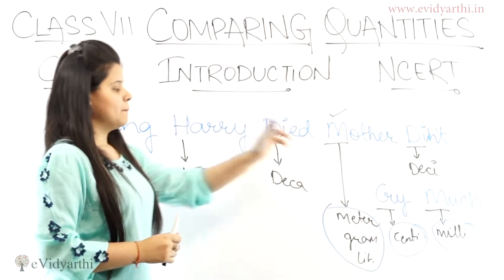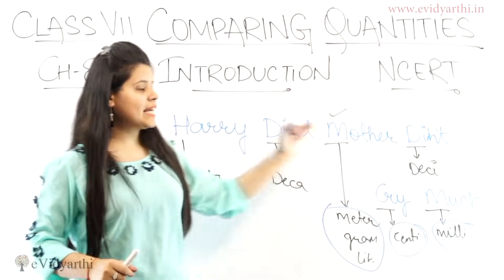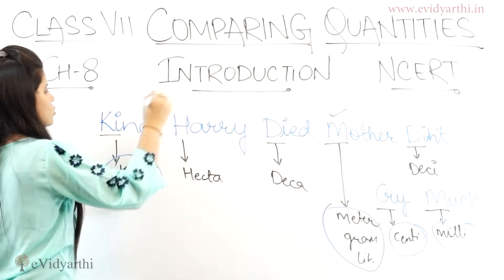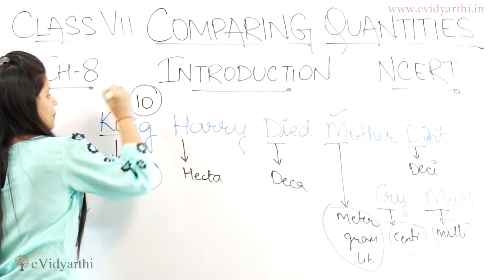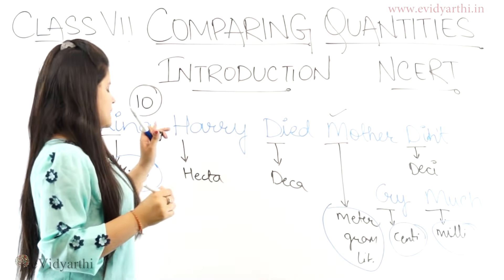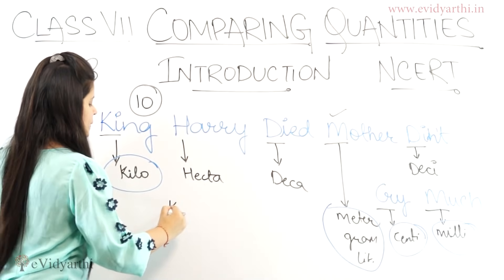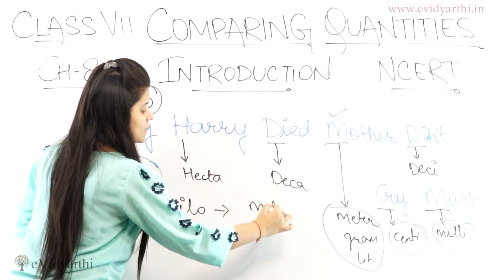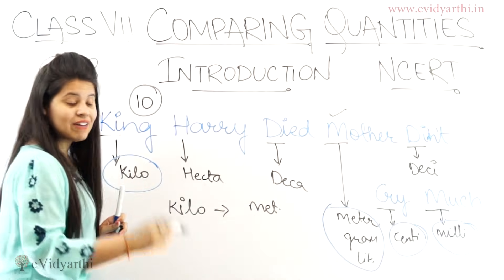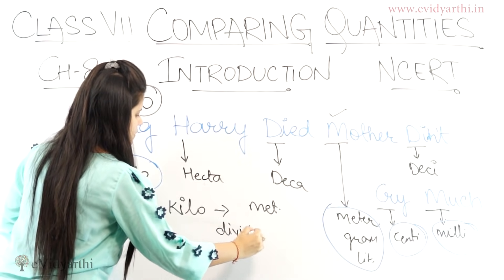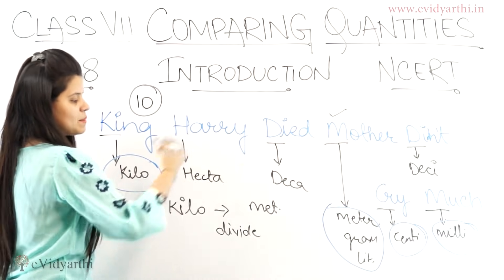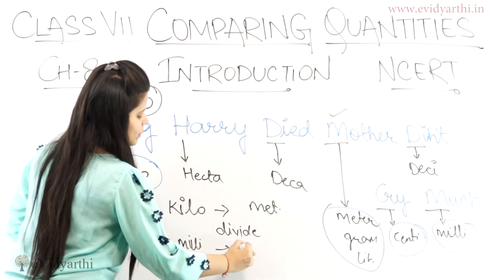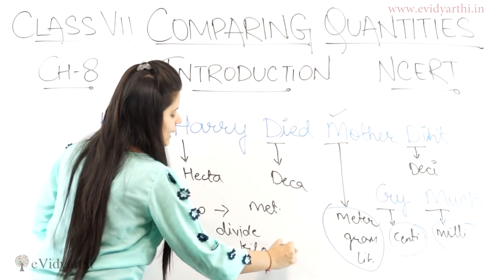Kilo is the biggest unit and millimeter is the smallest. So we are going from big to small. You should remember that there is a gap of ten between each unit. When you are going from big to small — for example, from kilometer to meter — you have to divide. Similarly, if you are going from small to big — like from millimeter to kilometer — you have to multiply.